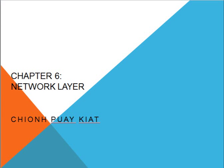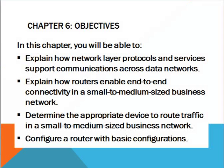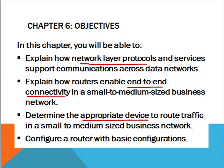Today we're going to cover chapter 6 on the network layer. For the objectives of this chapter, you're going to cover the following: namely to explain how the network layer protocols and services support communication across data networks, how routers enable end-to-end connectivity between business networks, to select the appropriate device to route traffic in the business network, and most importantly, to know how to configure a router with the basic configurations.